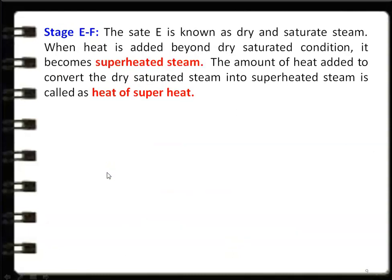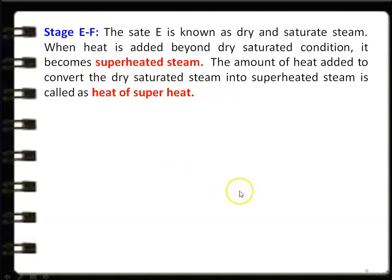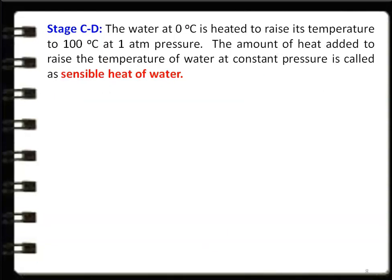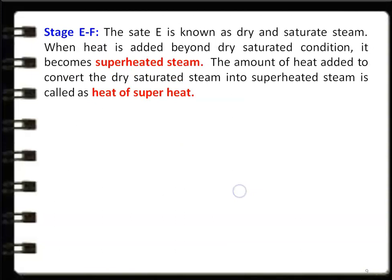Stage E–F: point E is known as dry saturated steam. When heat is added beyond the dry saturated condition, it becomes superheated steam. The heat added to convert dry saturated steam into superheated steam is called heat of superheat. So we have explained all five stages: A–B, B–C, C–D, D–E, and E–F.